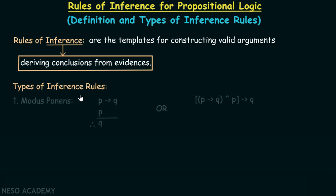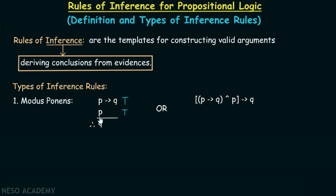The first rule is the modus ponens rule: p implies q, p, therefore q. This means when p implies q is true and p is true, then q has to be true — this is the conclusion. If p is true, we know that q has to be true; it cannot be false. Therefore, the conclusion must also be true. This is the law of modus ponens.